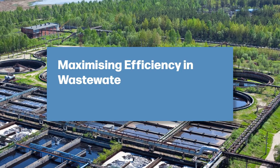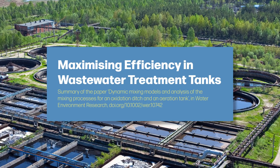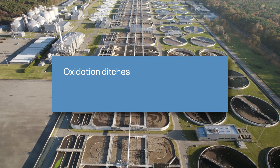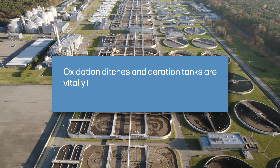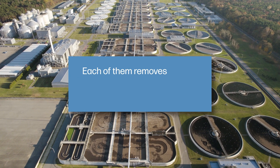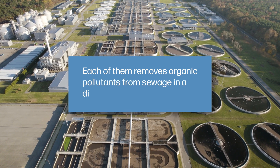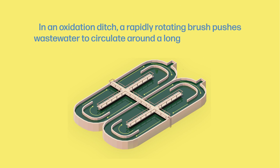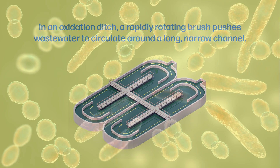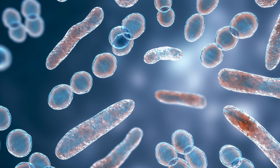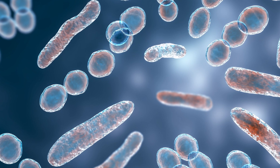Oxidation ditches and aeration tanks are vitally important facilities for urban wastewater treatment. Each of them removes organic pollutants from sewage in a different way. In an oxidation ditch, a rapidly rotating brush pushes wastewater to circulate around a long narrow channel, encouraging mixing and aeration in the water, helping the microbes inside to break down harmful organic pollutants more quickly.